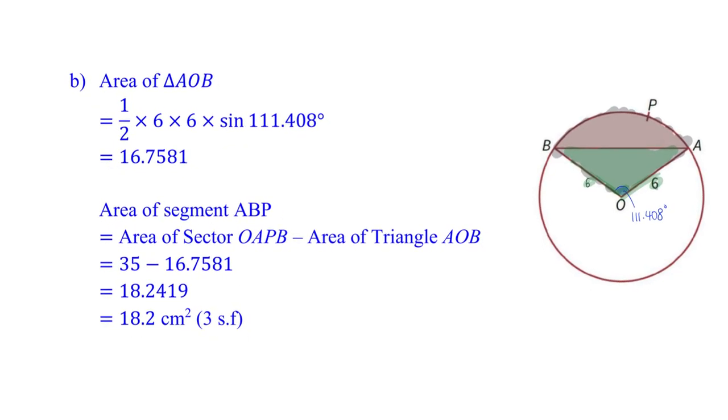Step one. Then you will see Mr. Tan here trying to find the area of the green color triangle, applying the formula to find area of a triangle. Then the red color area is simply the sector minus away the triangle. And this will be the final answer in 3 significant figures.